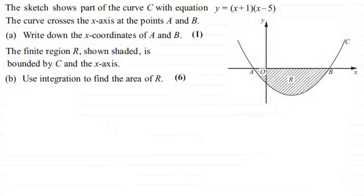Hi there. Now for this question we're shown this sketch here. It shows part of the curve C with equation y equals x plus 1 multiplied by x minus 5. And the curve crosses the x-axis at the points A and B. And for the first part we've just got to write down the x-coordinate of A and B for one mark.